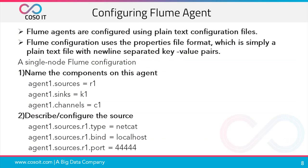Now we will see how to configure the source, channel, and sink. To configure the Flume agent, you need to create a text file using property file format similar to a Java property file, with key-value pairs separated by new lines. Let us see an example of a single-node Flume configuration. We'll name the agent as agent1. To name the components on this agent, we define agent1.sources as r1, sinks as k1, and channels as c1.